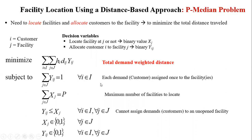Subject to the first constraint, each customer must be assigned once to the facilities. The second constraint defines the maximum number of facilities we can locate, which is P. The last constraint states we cannot assign a customer to a facility unless it is open — Xj and Yij are both binary variables.